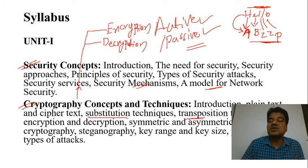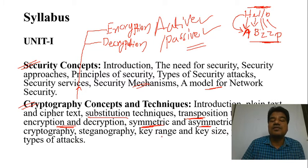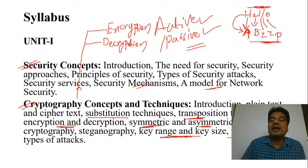We will go into detail on what encryption and decryption are. There are two basic types of cryptography techniques: symmetric key cryptography and asymmetric key cryptography. We will also see how to select keys — what methods and models to follow for key selection — as well as key range, key size, and what types of possible attacks can occur to our transmission. This concludes the first unit.